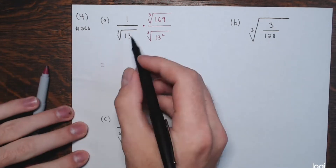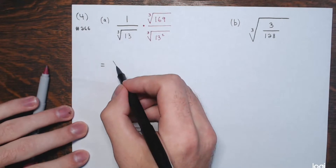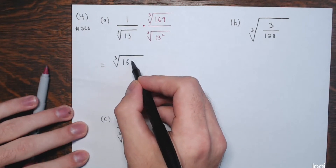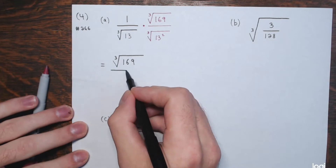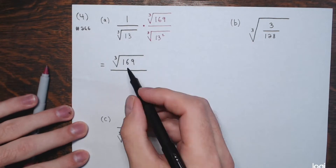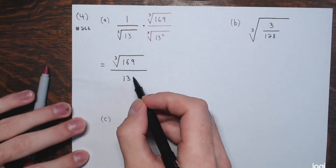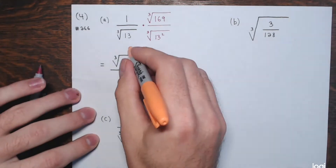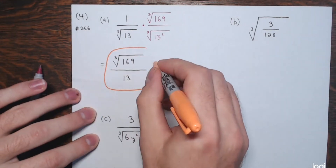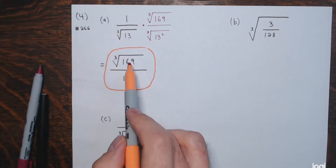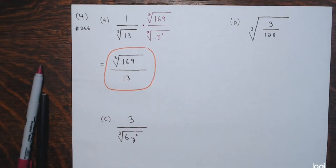So the numerator becomes 1 times the cube root of 169, which is just the cube root of 169. The denominator has the cube root of 13 cubed, which is just 13. The denominator is now rationalized — no more radicals. Double-check with a calculator: take the original expression and the final expression and verify they give the same value.